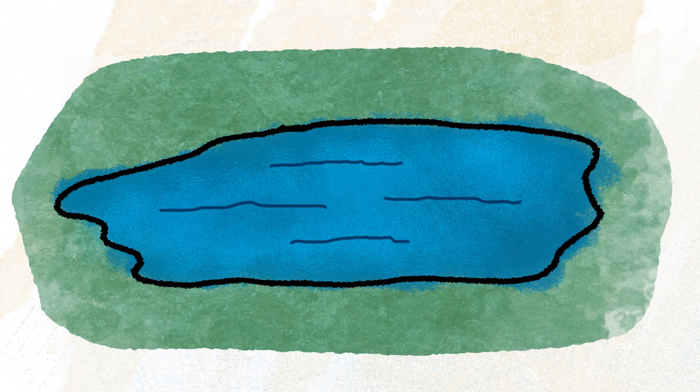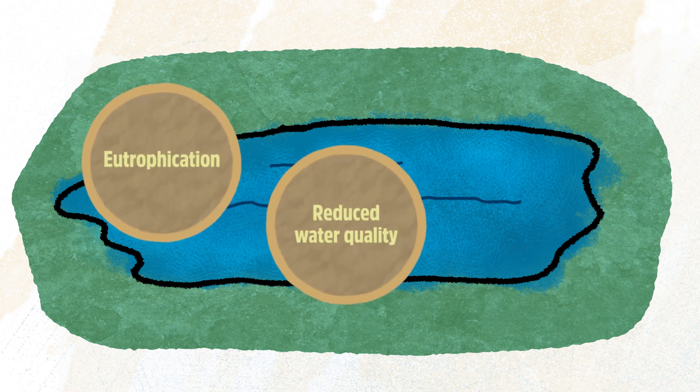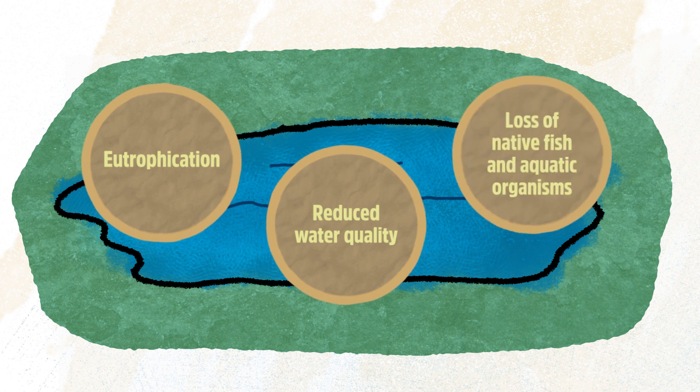During the past century, many of Alberta's lakes and ponds have experienced significant eutrophication, reduced water quality and loss of native fish and aquatic organisms.